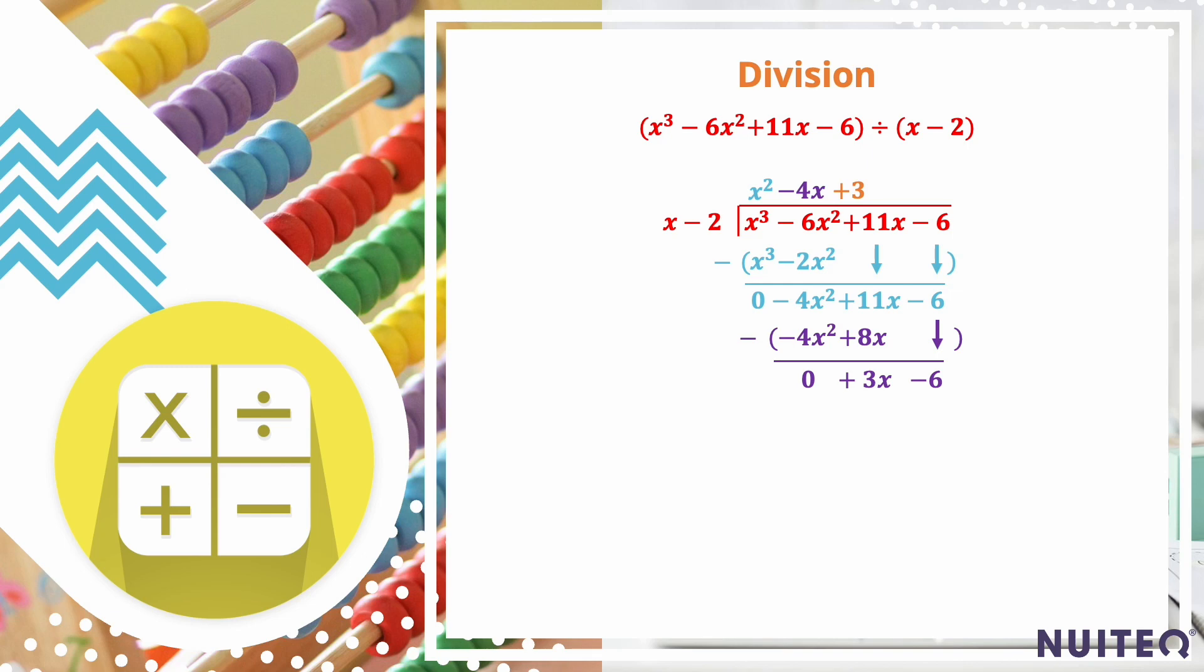Place the result (3) above the corresponding term in the dividend. Multiply the divisor (x - 2) by the result (3) and write it below the new dividend. Then subtract the result from the new dividend. The result of the division is the quotient x² - 4x + 3 with no remainder.